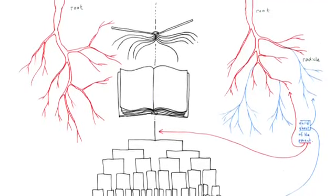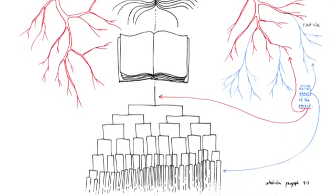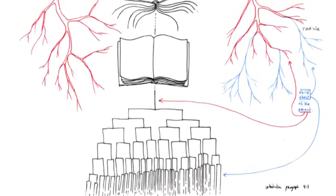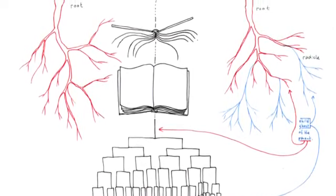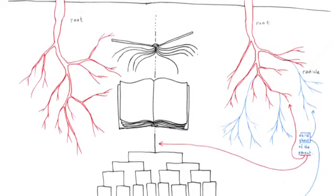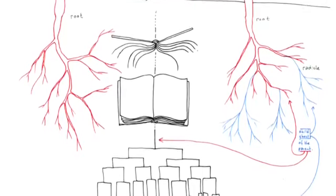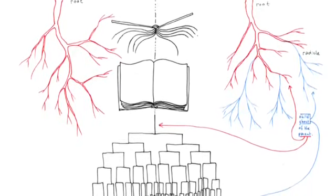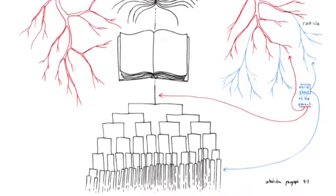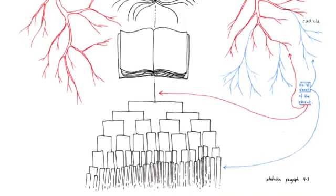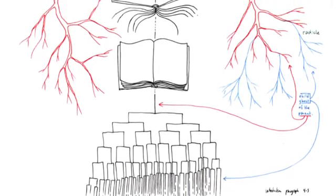Take William Burroughs' cut-up method, the folding of one text onto another, which constitutes multiple and even adventitious roots, implies a supplementary dimension to that of the texts under consideration. In this supplementary dimension of folding, unity continues its spiritual labor. That is why the most resolutely fragmented work can also be presented as the total work, or magnum opus.